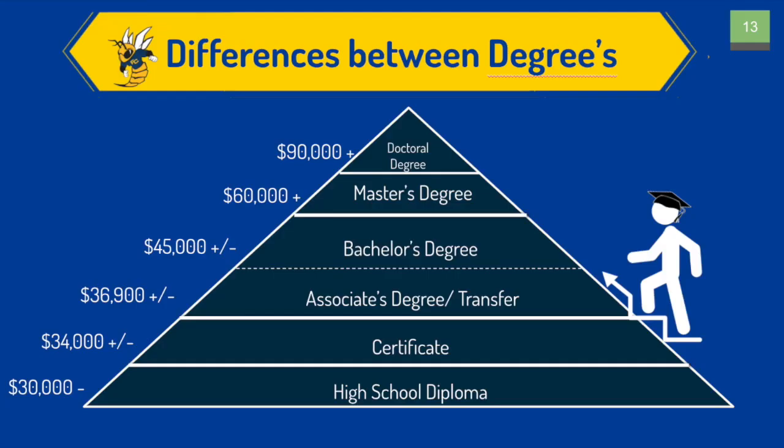Here you can see a diagram of possible wages you can earn based on your education. Please note that these are just averages and you can make more or less with each degree. As you can see, with a high school diploma you can expect to make around $30,000, while if you have a bachelor's degree you can earn around 50% more, at $45,000.